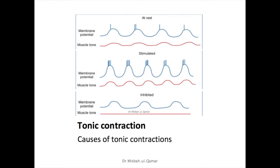Another character in our GI story is tonic or sustained contraction. A tonic contraction is a continuous contraction often lasting for minutes or hours, and these contractions are not associated with the basic electrical rhythm of slow waves. Their intensity can be increased or decreased, but they are always present. Some smooth muscles of the GI tract exhibit tonic contractions as well as, or instead of, rhythmical contractions.